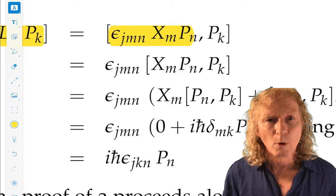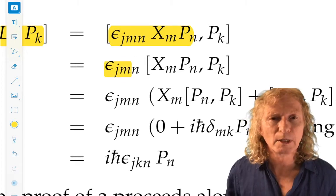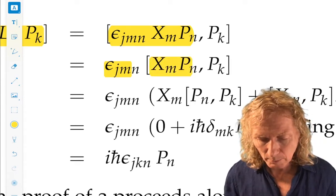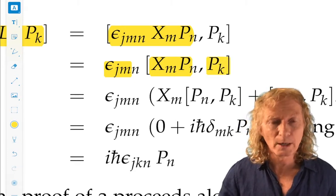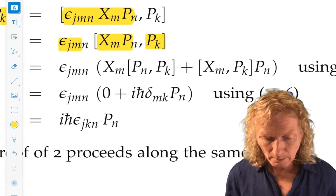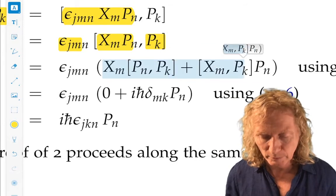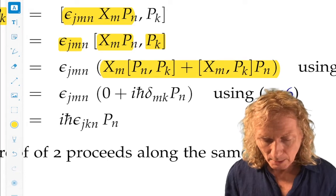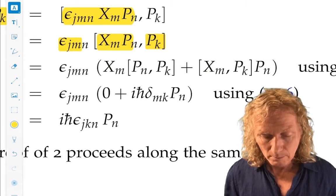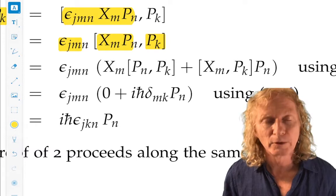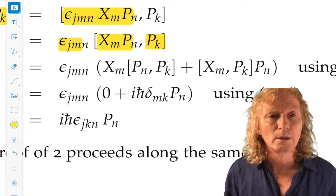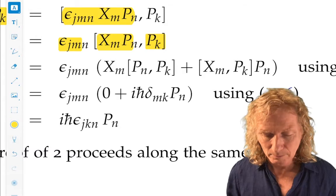It's just a number. 1, minus 1, or 0. So we can pull it out of the commutator relation. So we're just left with X_m P_n commutator with P_k. And now you see where that relation that we just derived can be used. And this is what we have. If you remember the pattern, you can see immediately what we have.